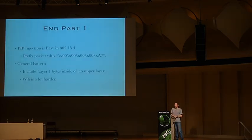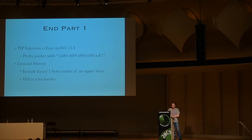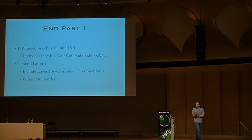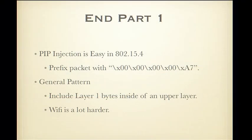This is the end of part one covering PIP injection for 802.15.4. Moving on to 802.11: to quickly review, in 802.15.4 you just put four or five bytes of zeros and a single byte of 0xA7 before your packet. Put that before the length field the packet sniffer gives you, have a valid checksum at the end, send that as a string over ZigBee a thousand times, and it will fall through and you'll have an injection.